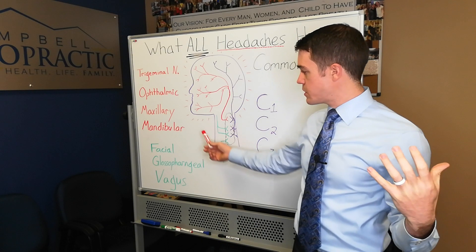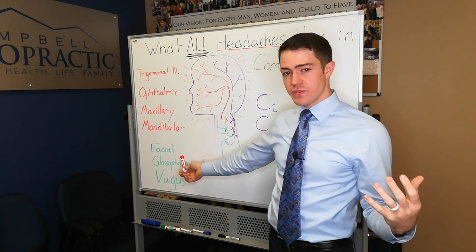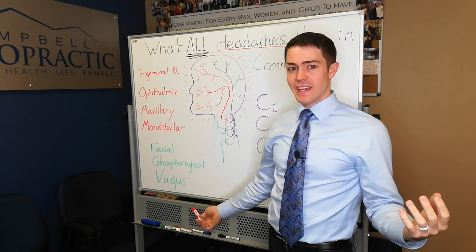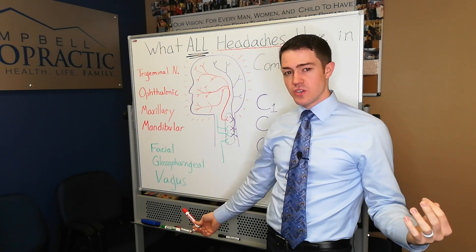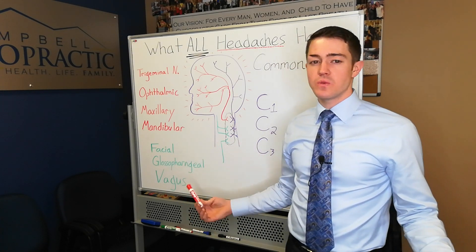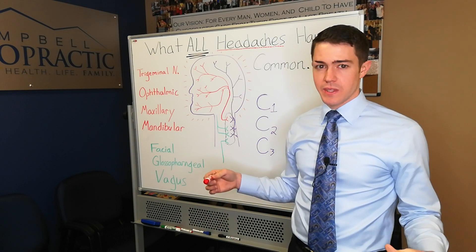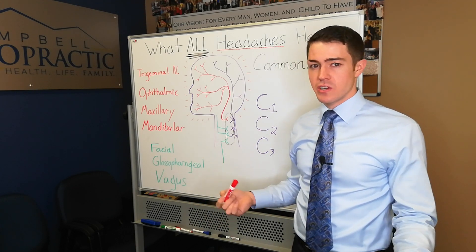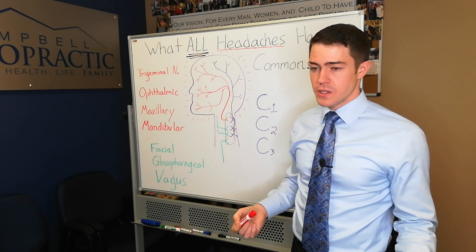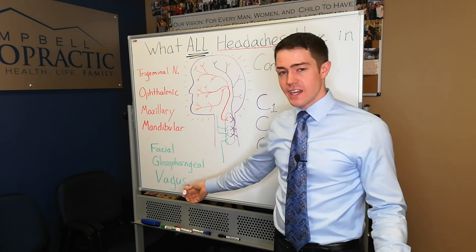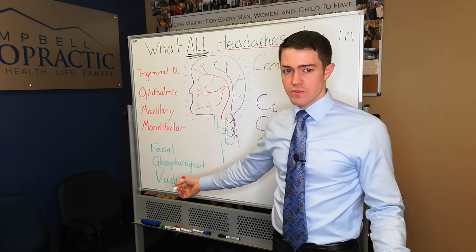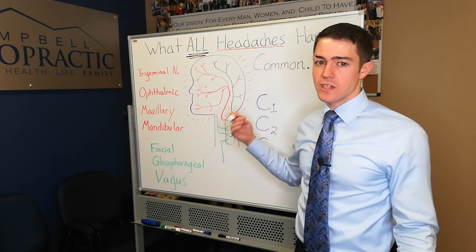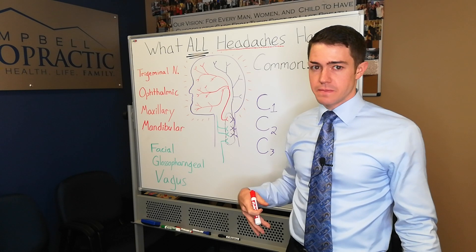Some smaller players are the facial, glossopharyngeal, and vagus nerves — these are the ones that can create the weird symptoms with headaches. Like, how does a migraine create nausea? It's through the vagus nerve, because the vagus nerve also meets here and it goes down to your gut.